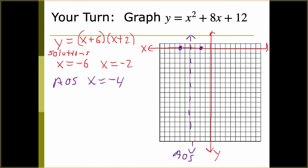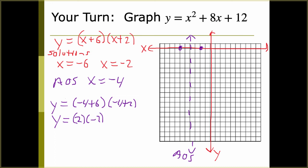We know x equals negative 4 for the AOS, so plug it into the factored form: (negative 4 plus 6) times (negative 4 plus 2) equals 2 times negative 2, which is negative 4. Our vertex is at (negative 4, negative 4).